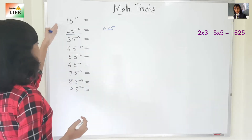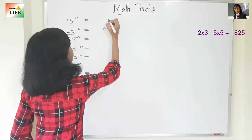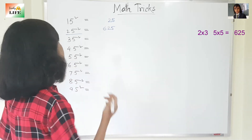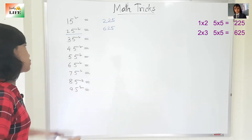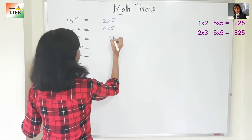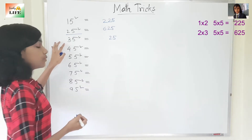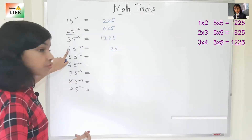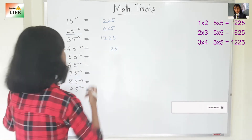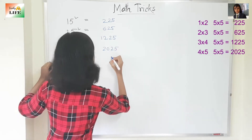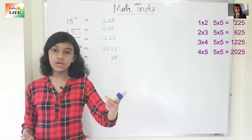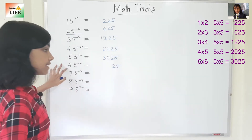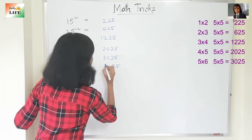Now let's solve the others. 15 square: 5 square is 25, and 1 — the successor of 1 is 2, so 1 into 2 is 2, answer is 225. 35 square: 5 square is 25, successor of 3 is 4, 3 into 4 is 12, answer is 1225. 45 square: 4 into 5 is 20, answer is 2025. 55 square: 5 into 6 is 30, answer is 3025. 65 square: 6 into 7 is 42, answer is 4225.